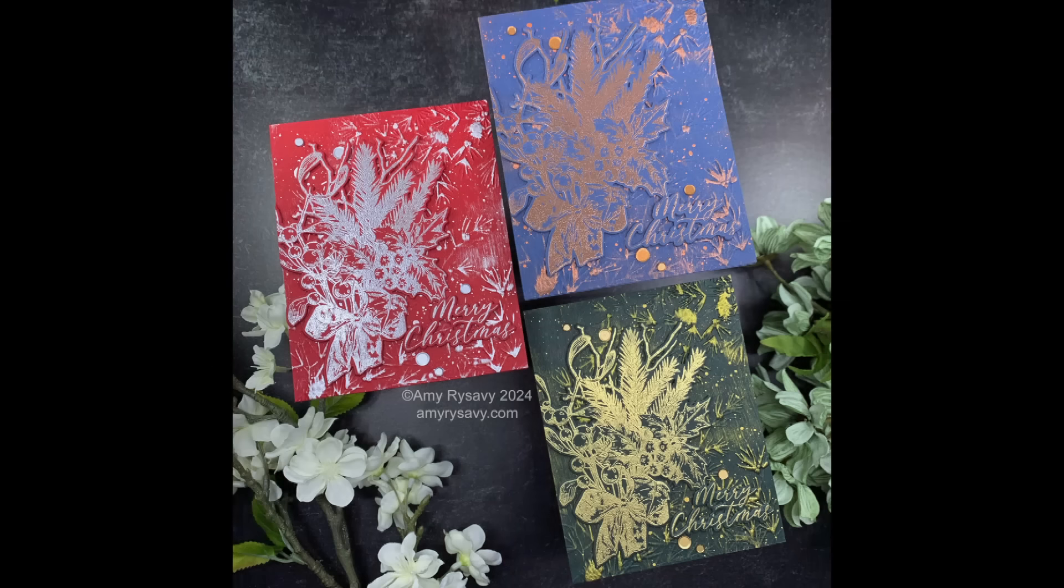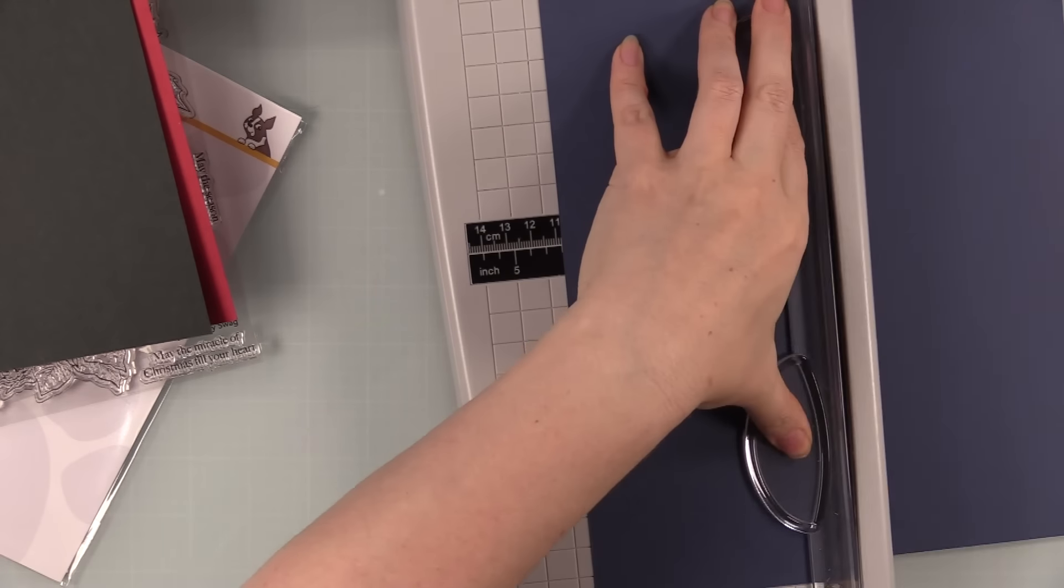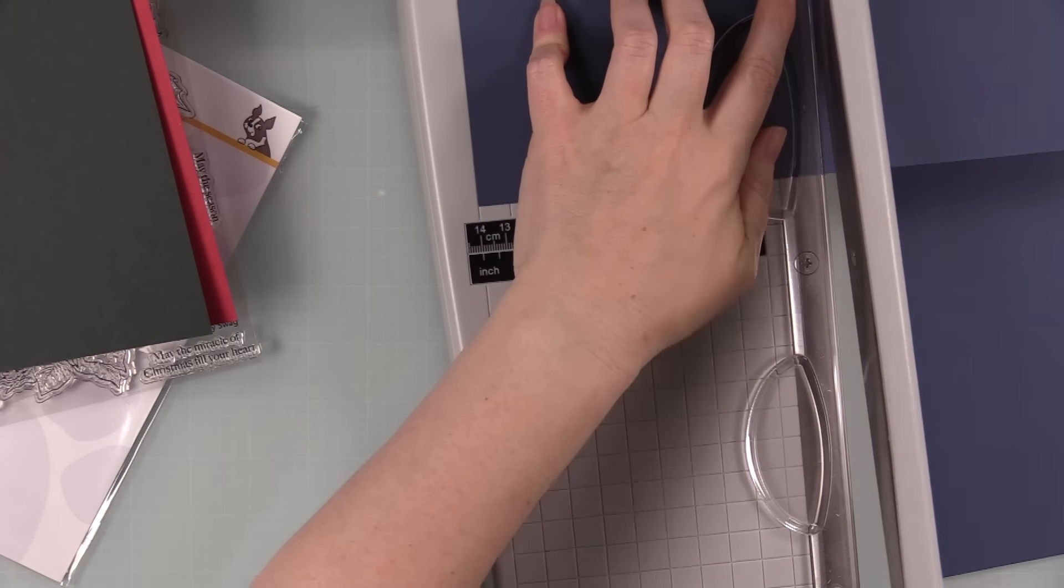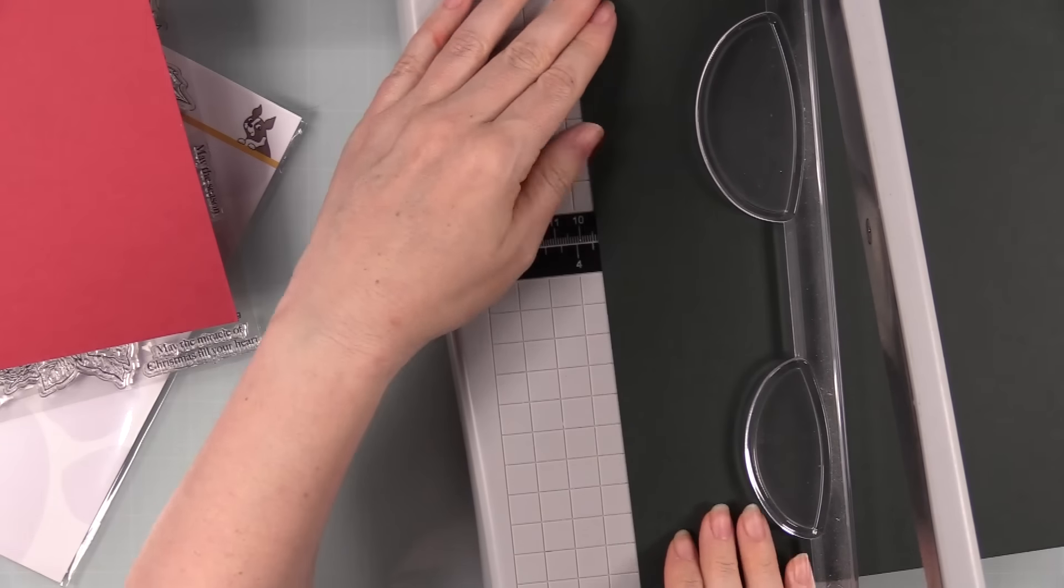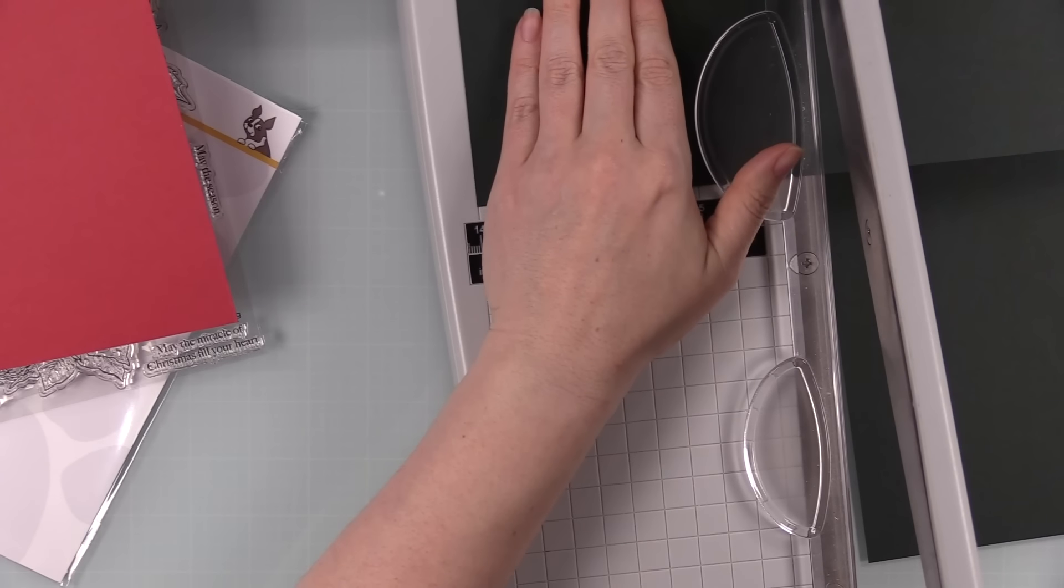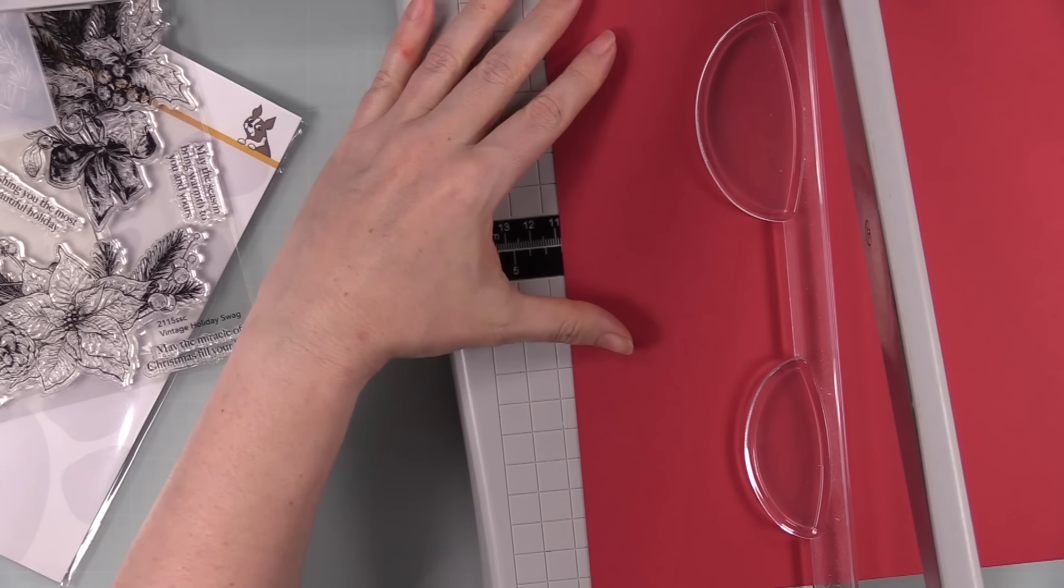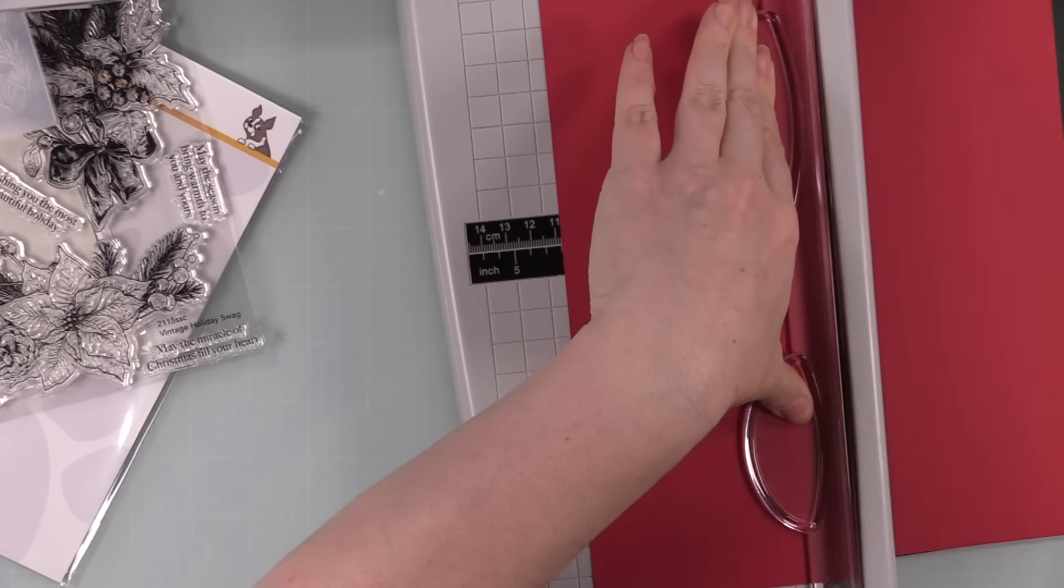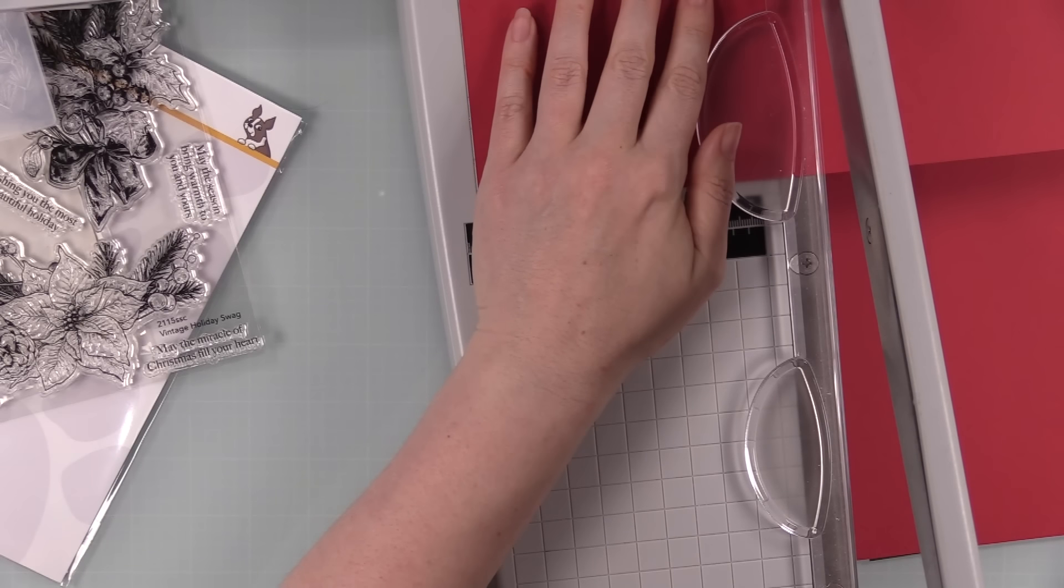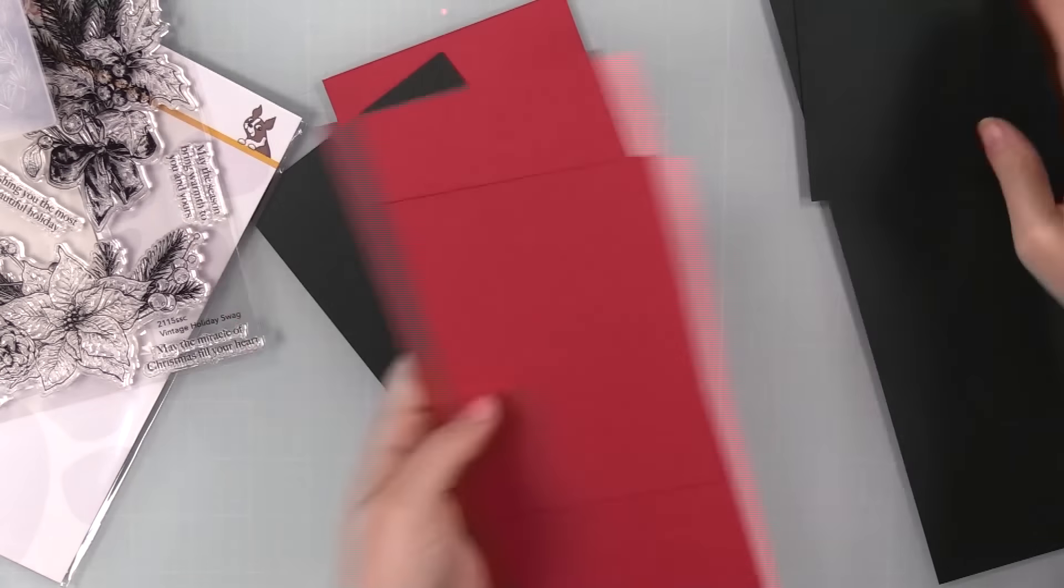I couldn't decide on just one color, so I pulled out three different colors of Simon Says Stamp card stock. I've got soft navy, midnight green, and schoolhouse red. I'm cutting each of these full sheets in half lengthwise, so I'll have my card bases and then panels to use for the card front. This card stock is 8.5 by 11 inches, so cutting it in half lengthwise makes them 4.25 by 11 inches, and then I'll score them later to make my card bases.